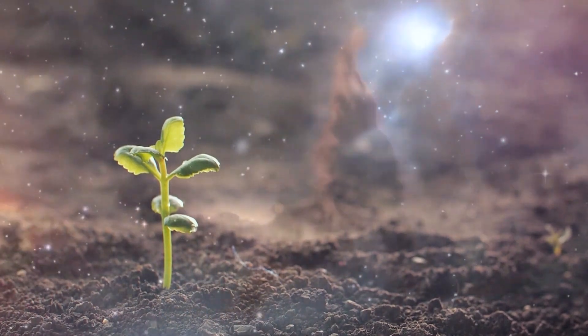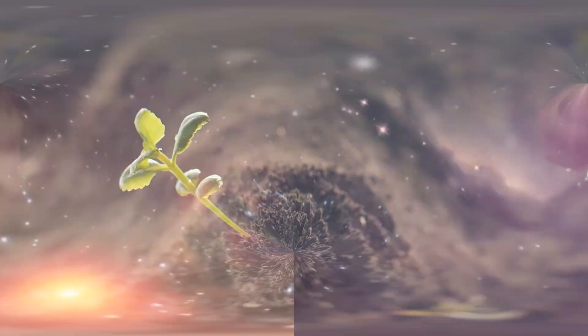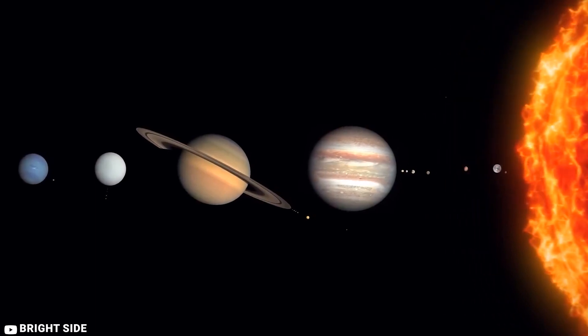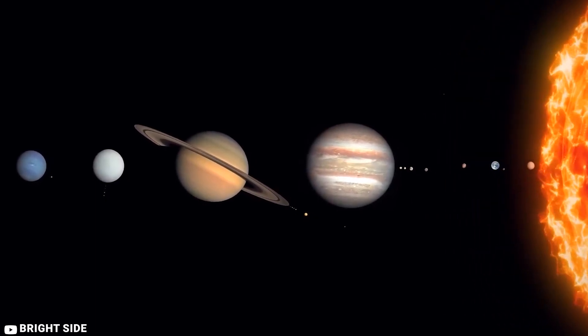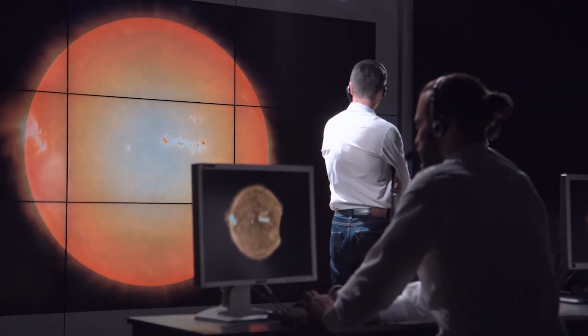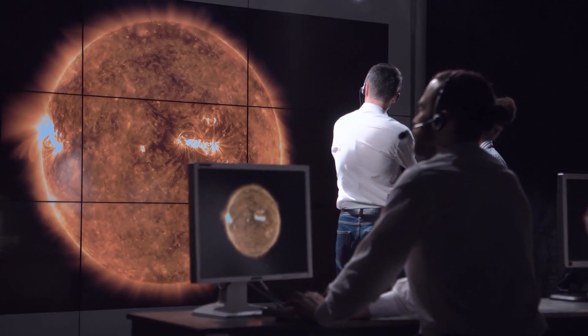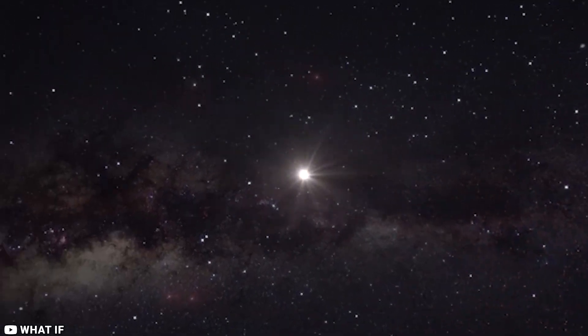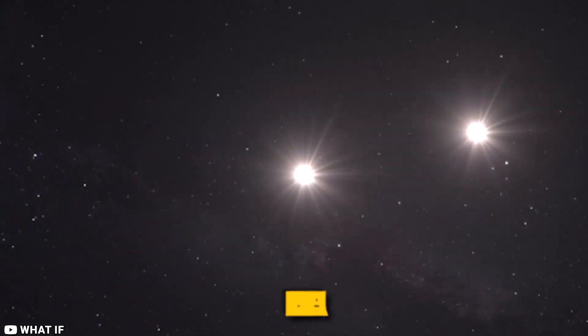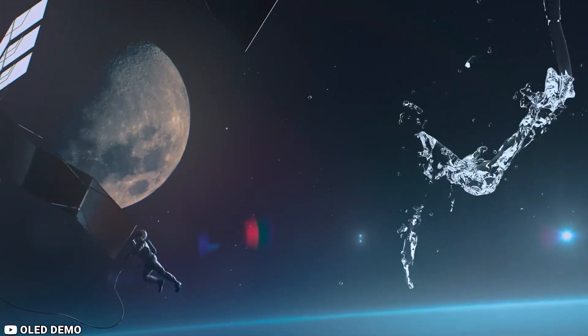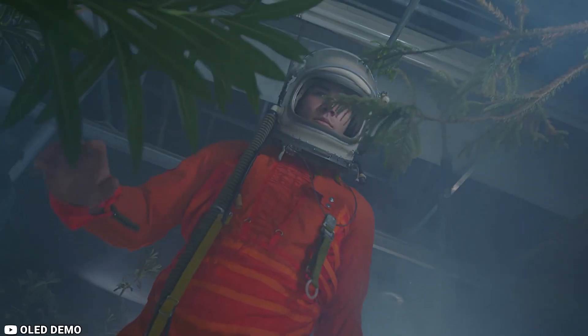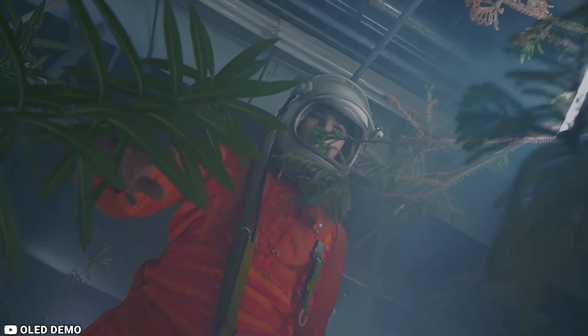There are a number of places in the universe where life could potentially exist. One place is on exoplanets, which are planets outside of our solar system. Scientists have discovered thousands of exoplanets in recent years, and some of them are located in the habitable zone of their star, which means that they could potentially support liquid water and other conditions that are necessary for life as we know it.